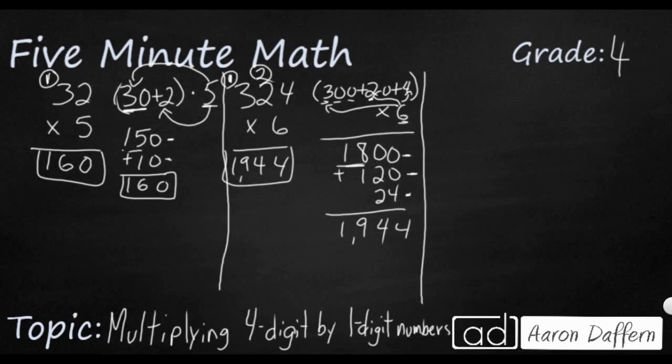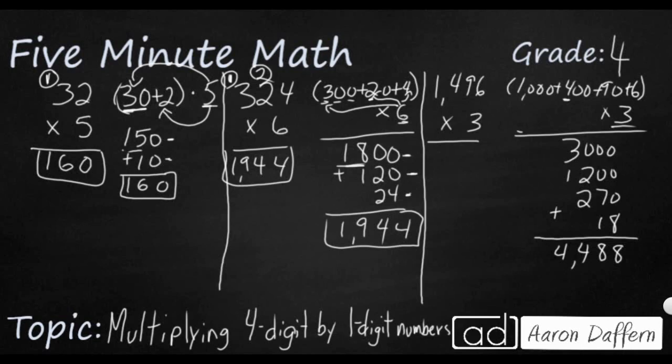So when we get to our 4-digit by 1-digit multiplication, it should be the same thing. So 1,496, let's multiply that by 3. Let's break that apart into expanded form: 1,000 plus 400 plus 90 plus 6. And you know what we're going to do? We're going to multiply all of that by 3. So here are my partial products. And my total is 4,488.